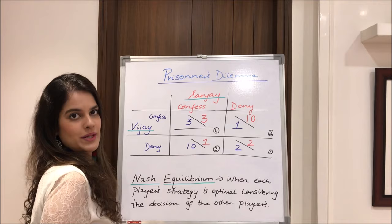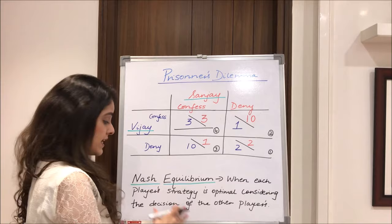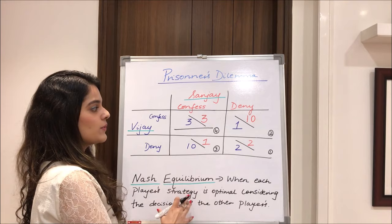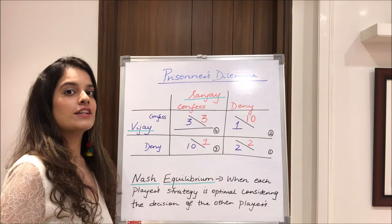Nash equilibrium is when each player's strategy is optimal considering the decisions of the other players. In this case, both Vijay and Sanjay end up confessing and going to jail for three years each — that is the Nash equilibrium.